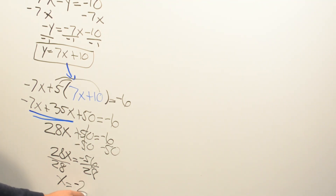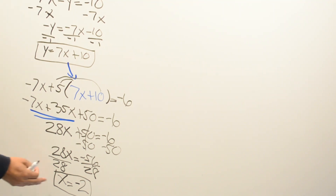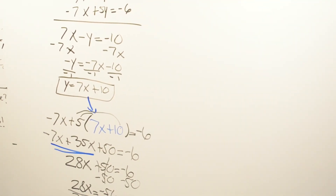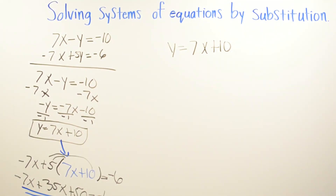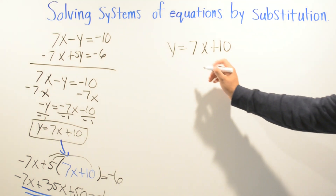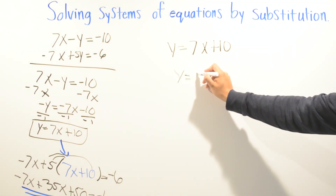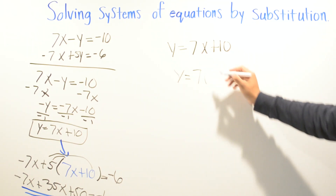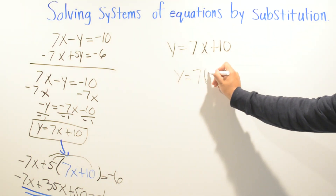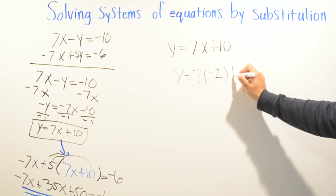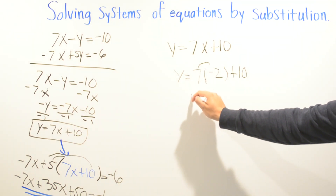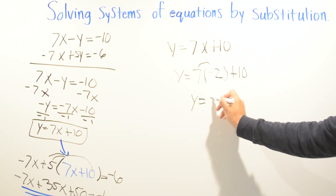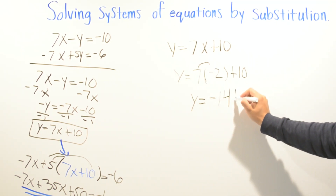Now that we have x, we plug it back into the equation y equals 7x plus 10. Substituting x equals negative 2, we get y equals 7 times negative 2 plus 10, which is y equals negative 14 plus 10.